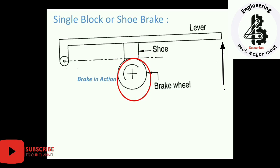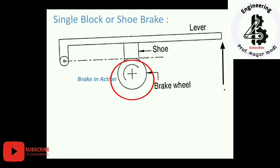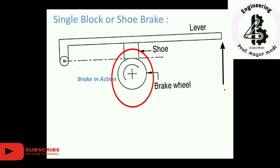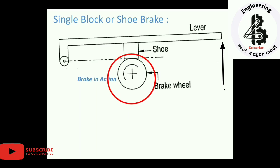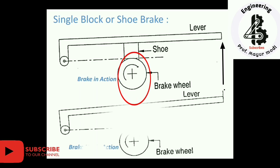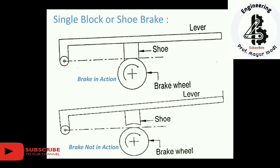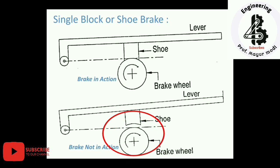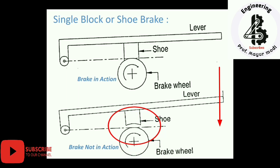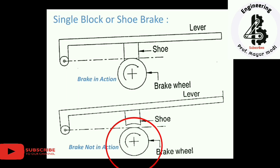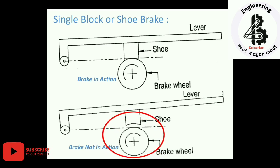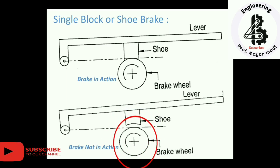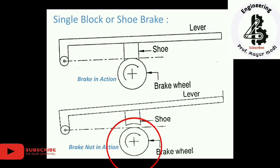The brake operates in a contact type action. Normally the shoe is not in touch with the brake wheel — it only makes contact when there is a requirement to control the motion. For automobile applications, the brake is not in action during regular use. But whenever speed control is required, the lever brings the single shoe or single block into contact to control the motion. This is called the single block or single shoe brake.